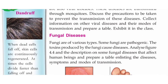We will learn about fungal diseases and fungus. Fungi are of various types. Some fungi are pathogenic. The toxins produced by the fungi cause diseases. The fungus known as black fungus is one example. Fungus is a type of pathogenic organism.